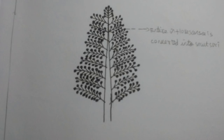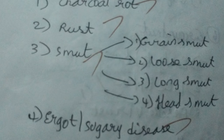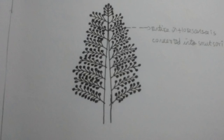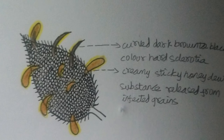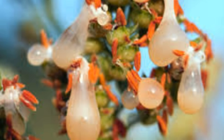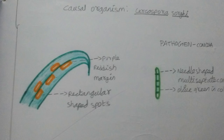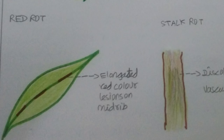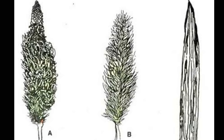Next is smut. There are three to four types of smut: grain smut, loose smut, and long smut. In smut disease, the grain is filled with black powder — the grain case is full of black sooty powder. Next, sugarcane disease includes red rot and leaf blight. In anthracnose red rot, there is a red rot symptom.